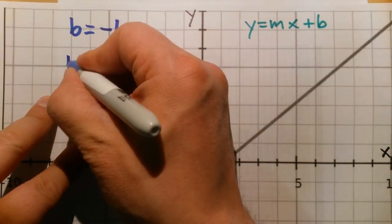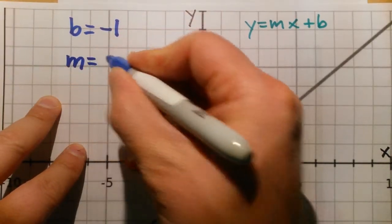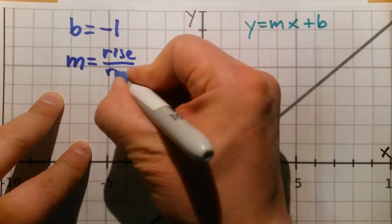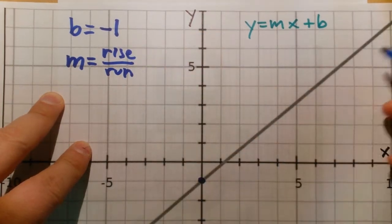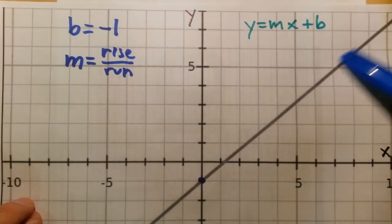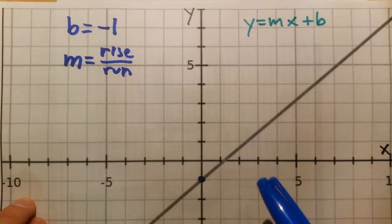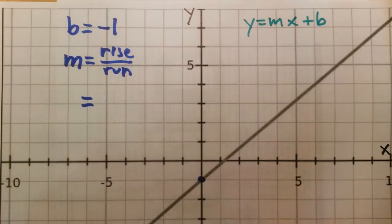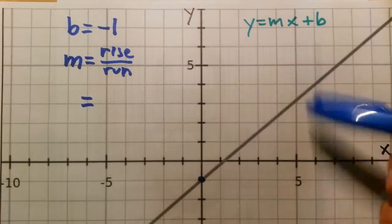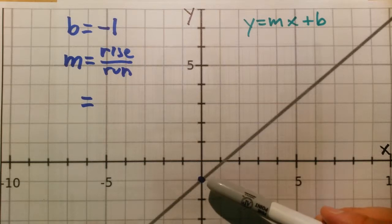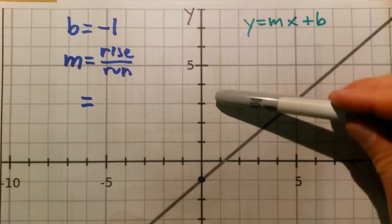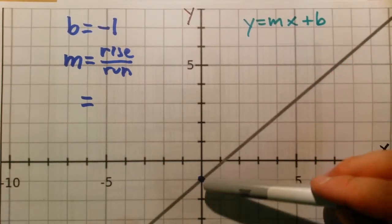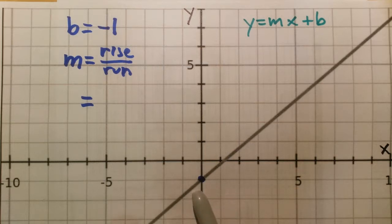Now let's figure out the slope of this line. We know that the slope is going to be equal to rise over run. By looking at this graph, we know that this line is increasing as we move to the right, so we expect the slope to be positive. So let's grab another point. The way to figure out the slope from this graph is by finding two points on this line — two points that are obvious. When given a line on a grid, try to find two points where it's obvious to figure out what they are.